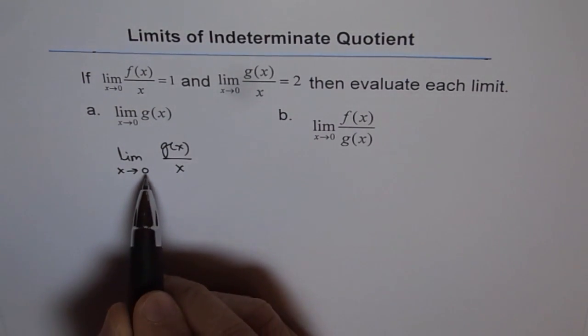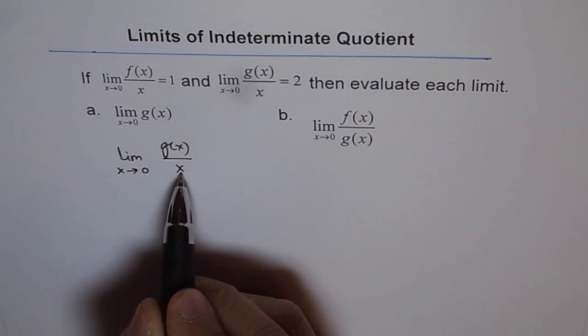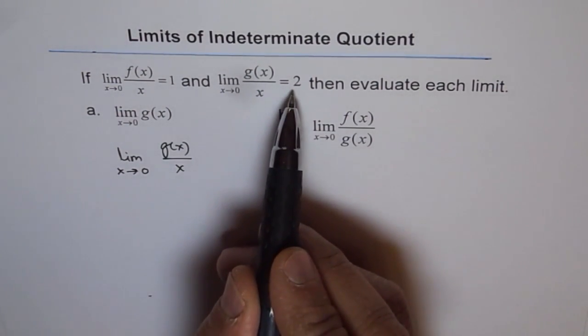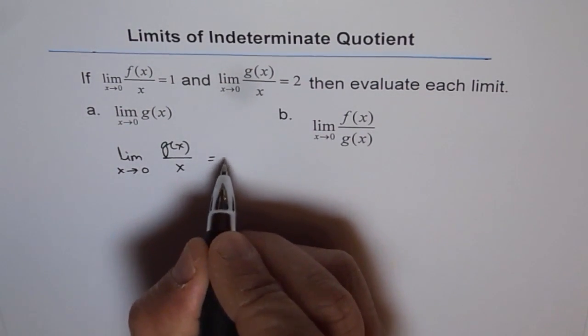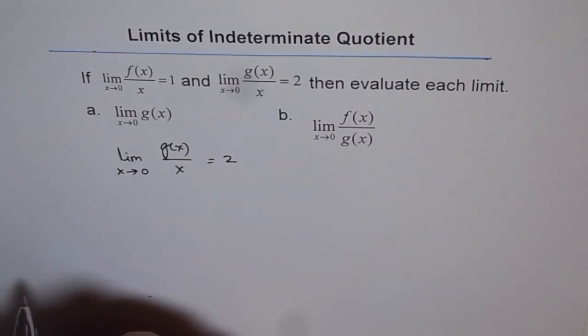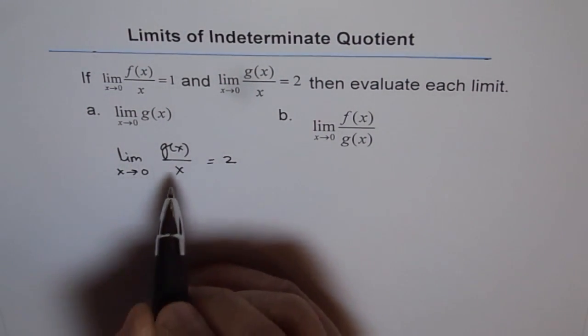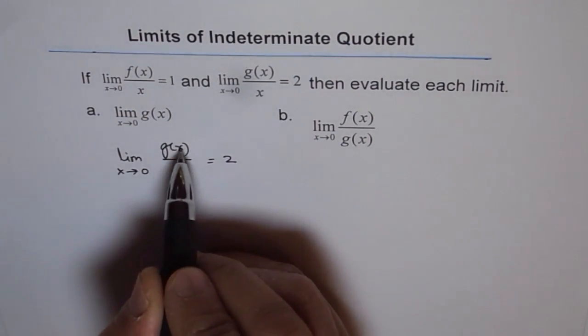Now, if x approaches 0, then the denominator will be 0 and this term will be undefined. We are given a limit of this function as 2. Limit of this function as 2 is possible only if there is a factor of x in g of x also.